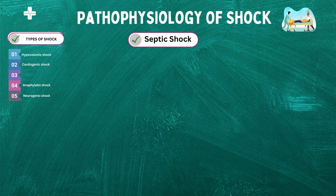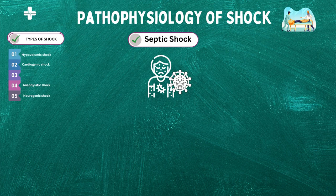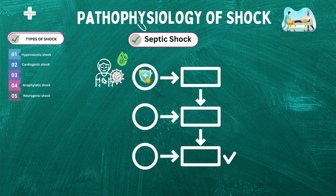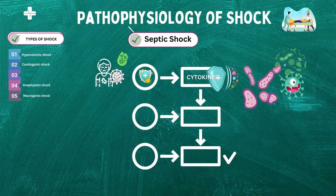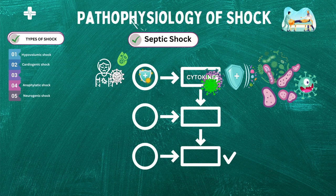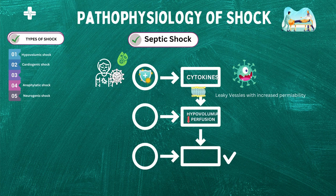Next, we will discuss the pathophysiology of septic shock. Septic shock is a life-threatening condition that occurs when the body's immune system overreacts to an infection, causing widespread inflammation and organ dysfunction. Septic shock begins with an infection, which can be caused by a variety of bacteria, viruses, or fungi. The immune system responds by releasing inflammatory mediators, such as cytokines and chemokines, to help fight off the invading pathogen. However, in septic shock, the immune response becomes dysregulated, and the inflammatory mediators can cause widespread damage to the body's tissues and organs. The vasculature becomes leaky, which can lead to hypovolemia and decreased tissue perfusion.